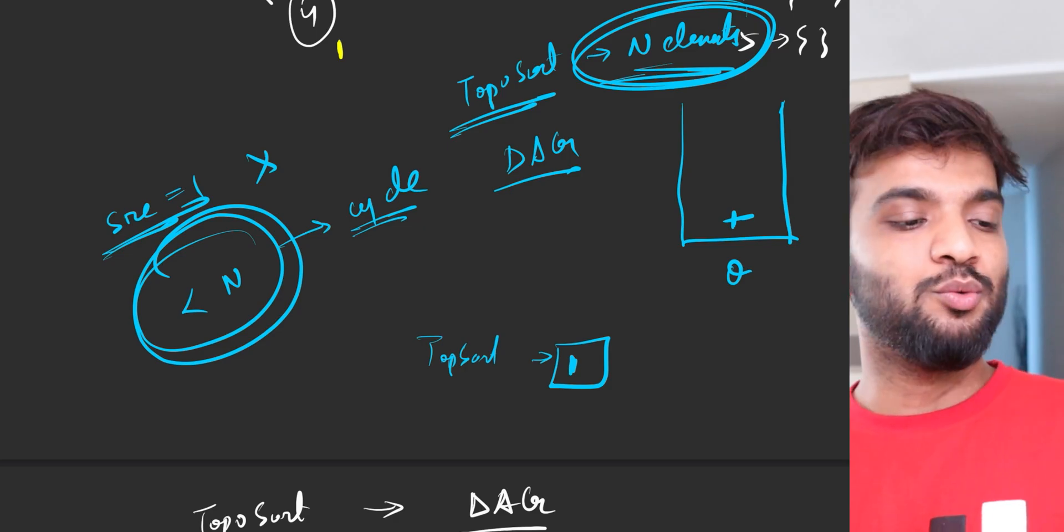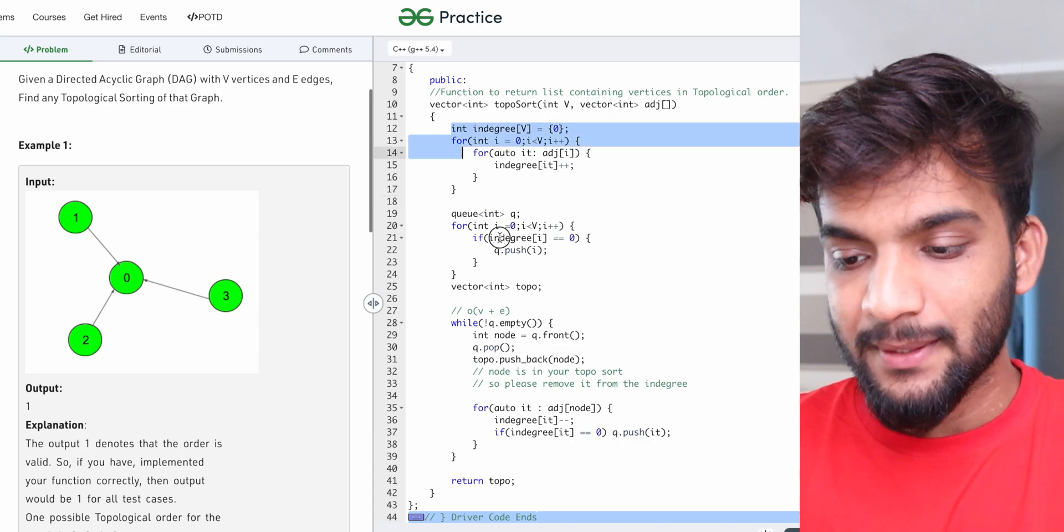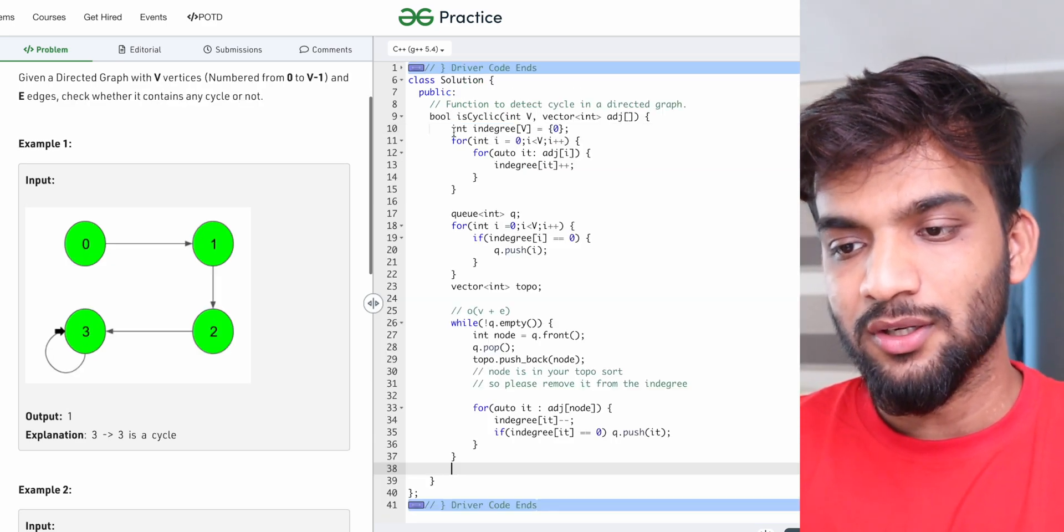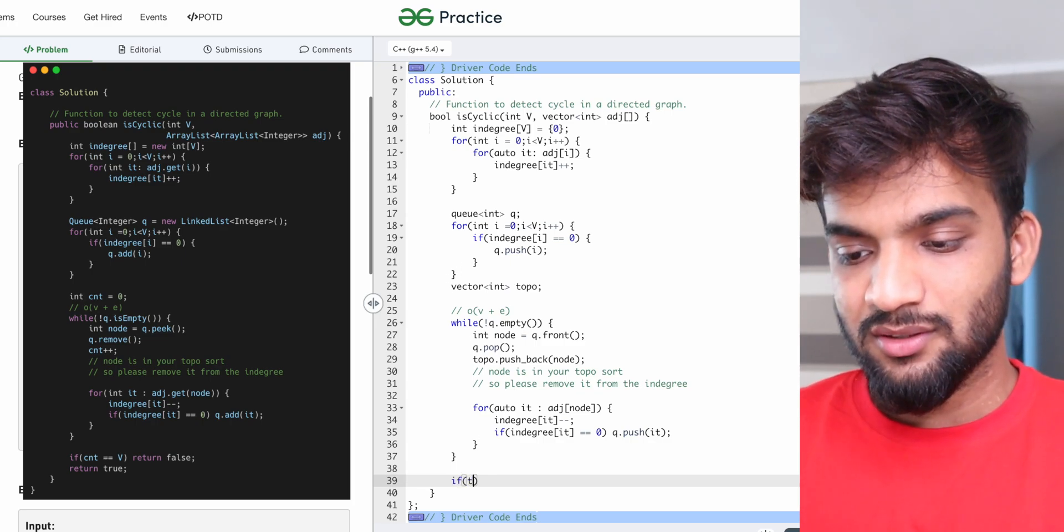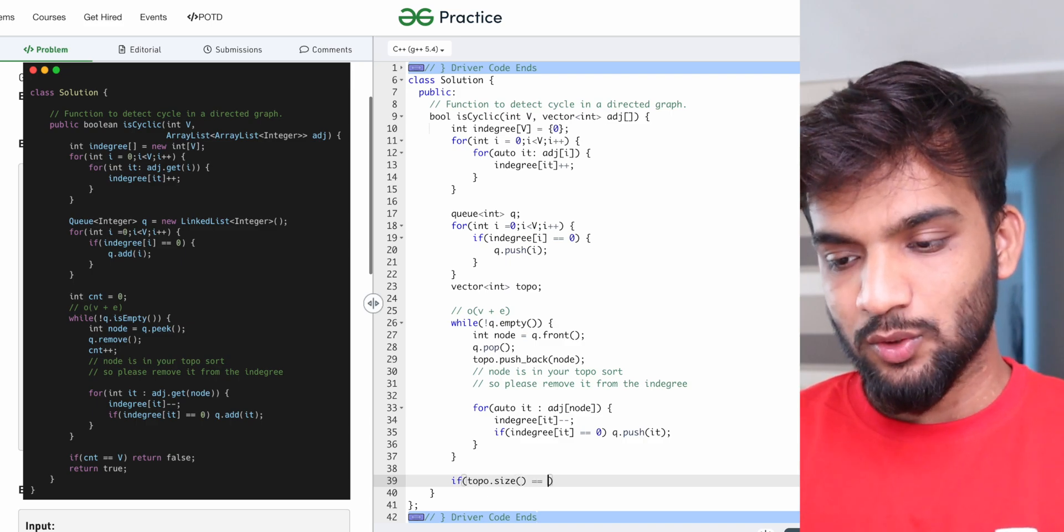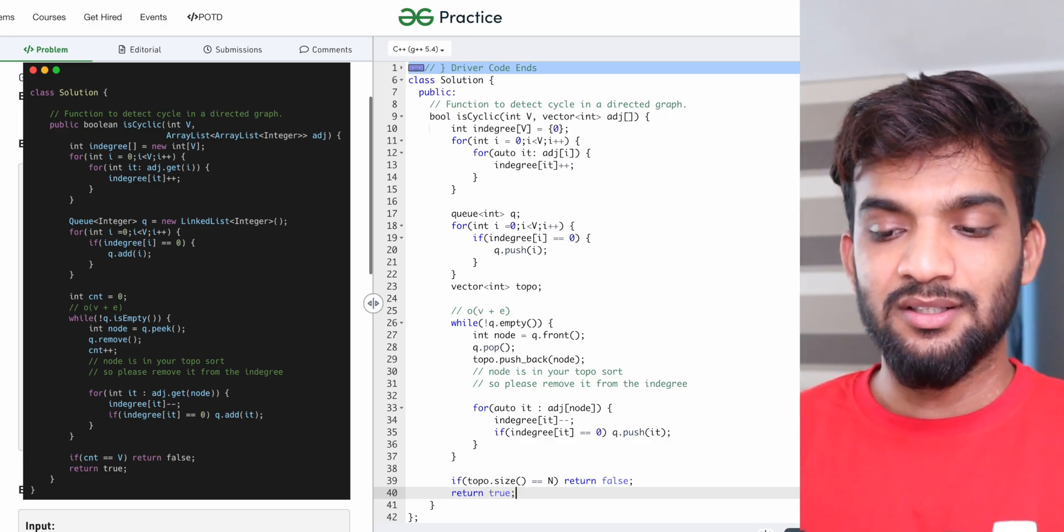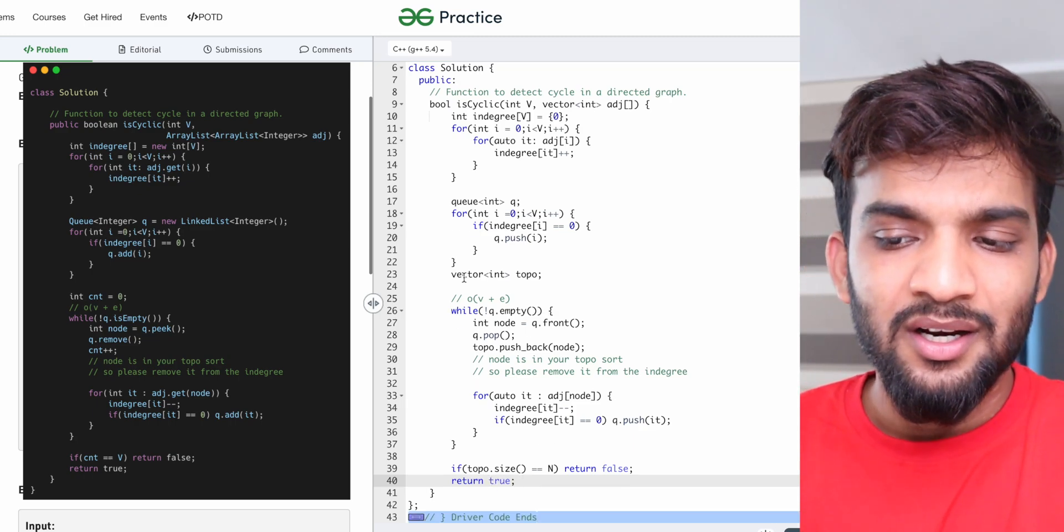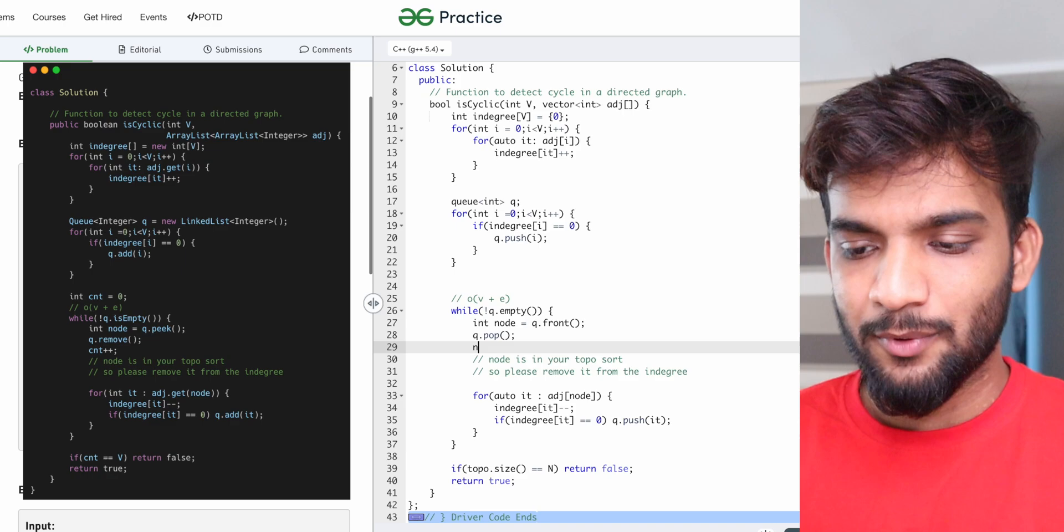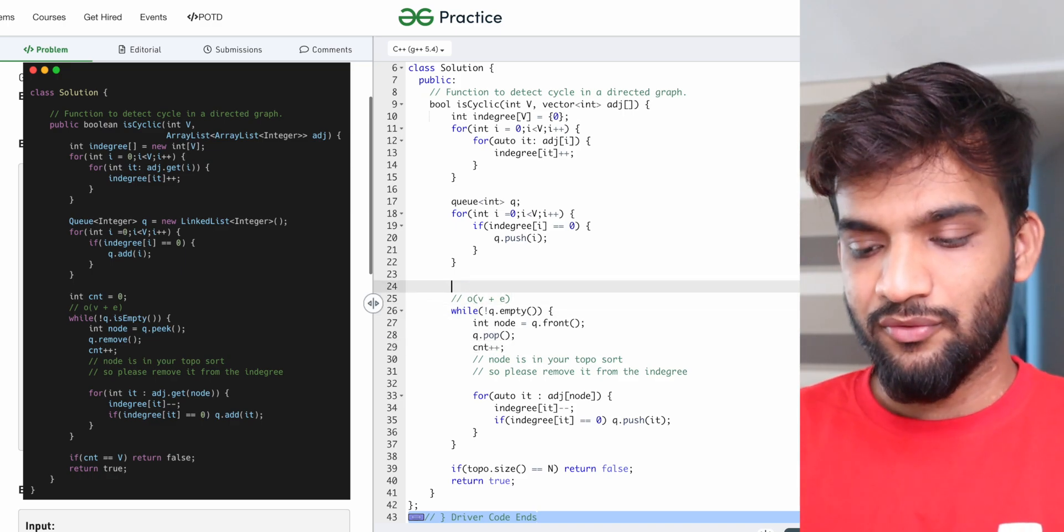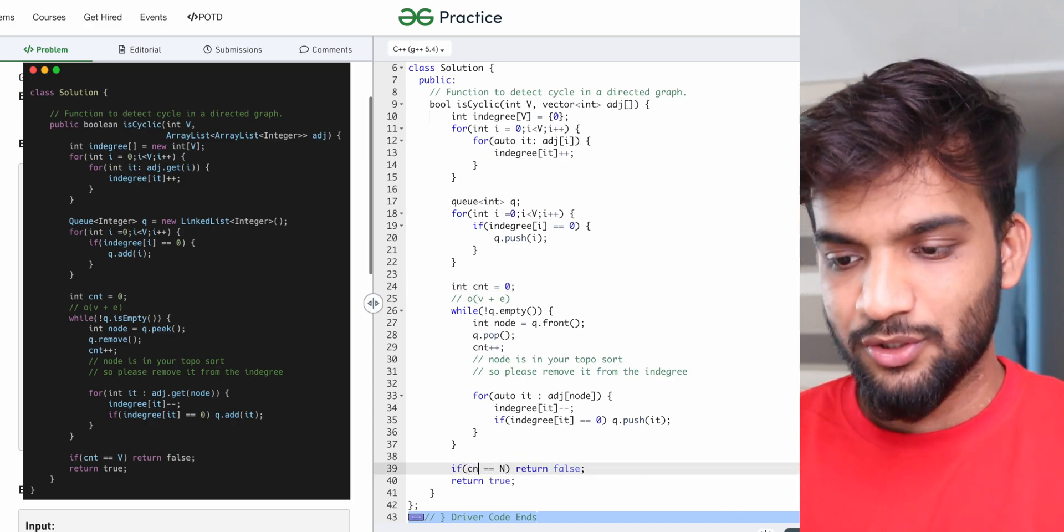So in order to code, what we will do is we'll go to the topo sort code and we'll copy paste it. Let's copy paste the code over here. Now when the topo sort has been produced, we say, listen, if the topo sort size is equal to n, then it does not have a cycle. Topo sort was produced. Otherwise it does have a cycle. Now do we need to store the topo sort? No we don't need. We can just omit this and we can probably keep a counter variable something like this instead of having the topo sort stored, because we just are concerned about the count.